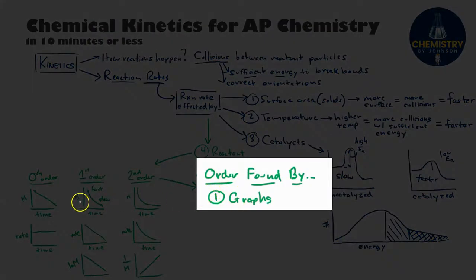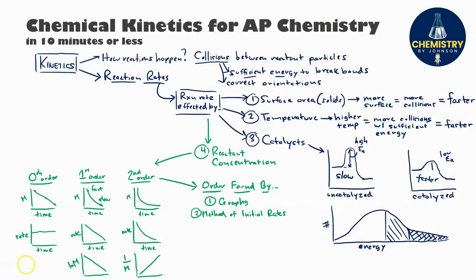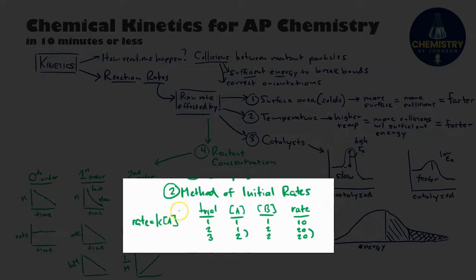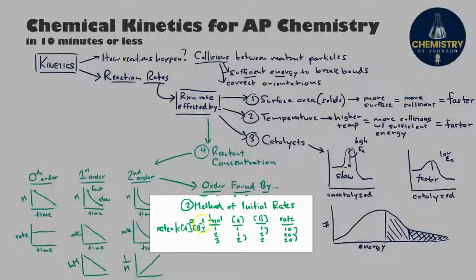You can identify reaction orders by analyzing graph shapes, or by looking at experimental data using the method of initial rates. That data appears in tables: if the concentration of A doubles and has no effect on the reaction rate, then A must be zeroth order, expressed in the rate law with an exponent of zero. If the concentration of B doubles and the rate also doubles, then B is first order and gets an exponent of one in the rate law.